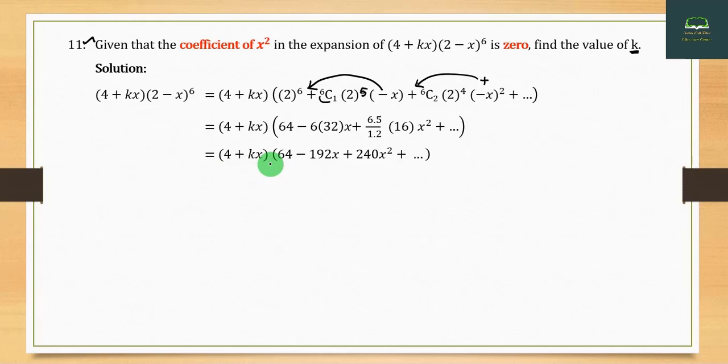Now multiply by (4 + kx): (4 + kx)(64 - 192x + 240x² + ...) = 4(64) + 4(-192x) + 4(240x²) + k(64)x + ... The coefficient of x² comes from the constant term times x² coefficient.